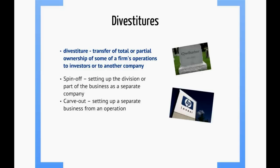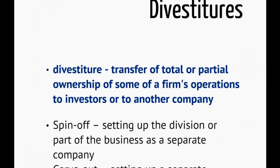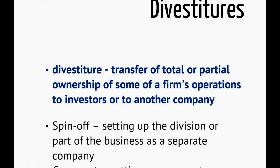We've talked about how businesses get bigger and expand into new markets, but what if they want to get out of certain markets? What can happen is you can do a couple of different things. First we see is divestiture. Divestiture is basically transferring either total or partial ownership of a company's operations to investors or to another company. So essentially you are getting out of a certain business — eliminating it completely. Whereas investing means getting into an industry, divesting or divestiture means removing yourself from that position.